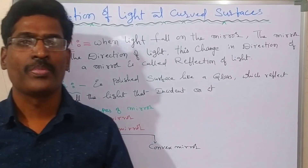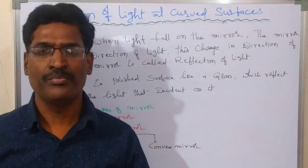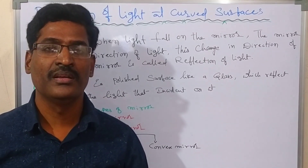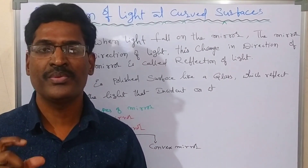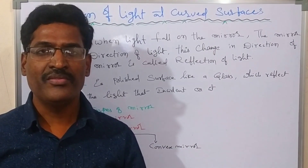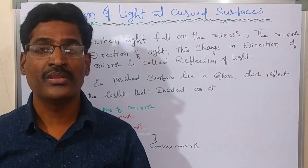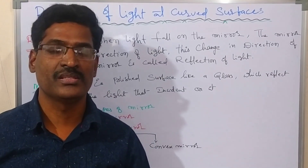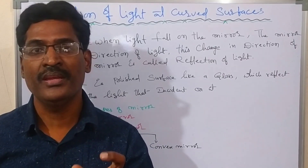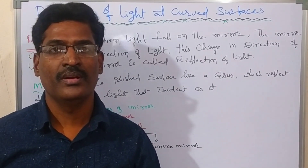One more question: the mirror used in automobiles — is it a plane mirror? If it is a plane mirror, how is the image formed? If not, how does the image appear? The image appears small. Why? One more question: can we focus all the sunlight rays at one point without using a magnifying glass? Can we get sunlight focused at one point using a mirror without a magnifying glass? Is it possible or not?